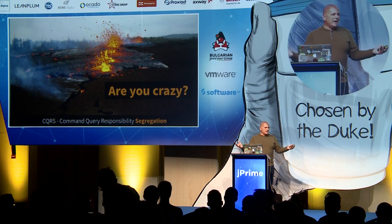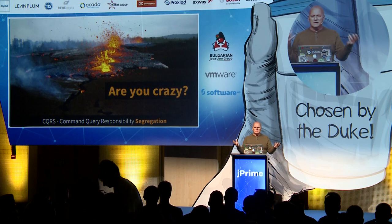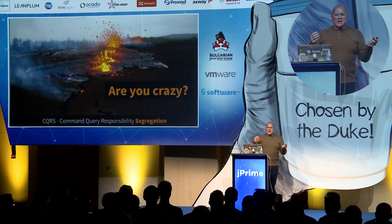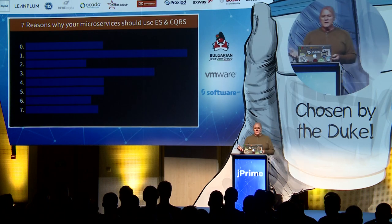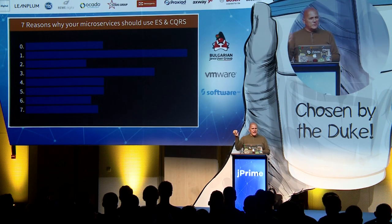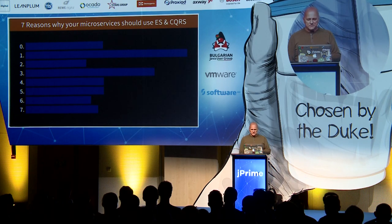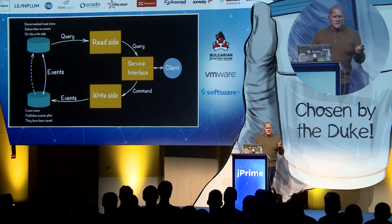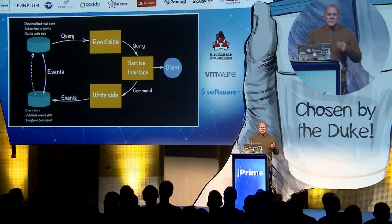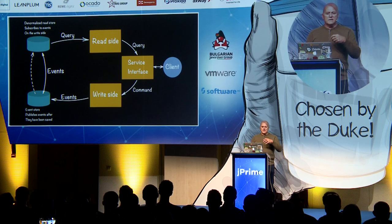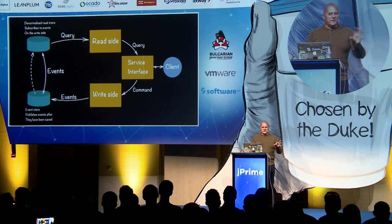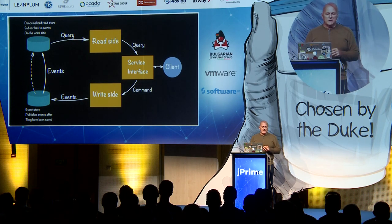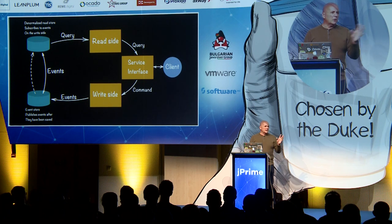When you propose this, people often think you're crazy — 'the world's going to end, you can't split up data!' This is why I wanted to do these seven reasons. I'll start with a zeroth reason: an overview of what event sourcing and CQRS are. This diagram shows the breakdown — you've got a microservice on the inside and a client sending in requests.